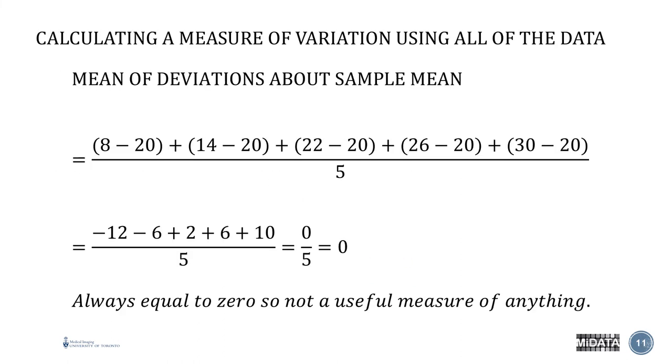Let's consider another measure of variation. But this time, we're interested in the spread of the data from the center of the distribution. So one way we could consider would be the mean of the deviations about the sample mean. You can see here in these calculations that we're simply taking the difference of each data point from its mean, and then we just divide it by the number of data points. The problem with this one is that it's always equal to zero. So this is not really a useful measure of anything.